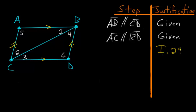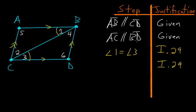To start this proof, let's use Book 1, Proposition 29, which says that if we have two parallel lines — in this case AB and CD — and some transversal line BC cutting across them, then the alternate angles are equal to each other. So angle 1 equals angle 3. Due to the same proposition, looking at sides AC and BD which are parallel with BC as a transversal, angle 2 equals angle 4.